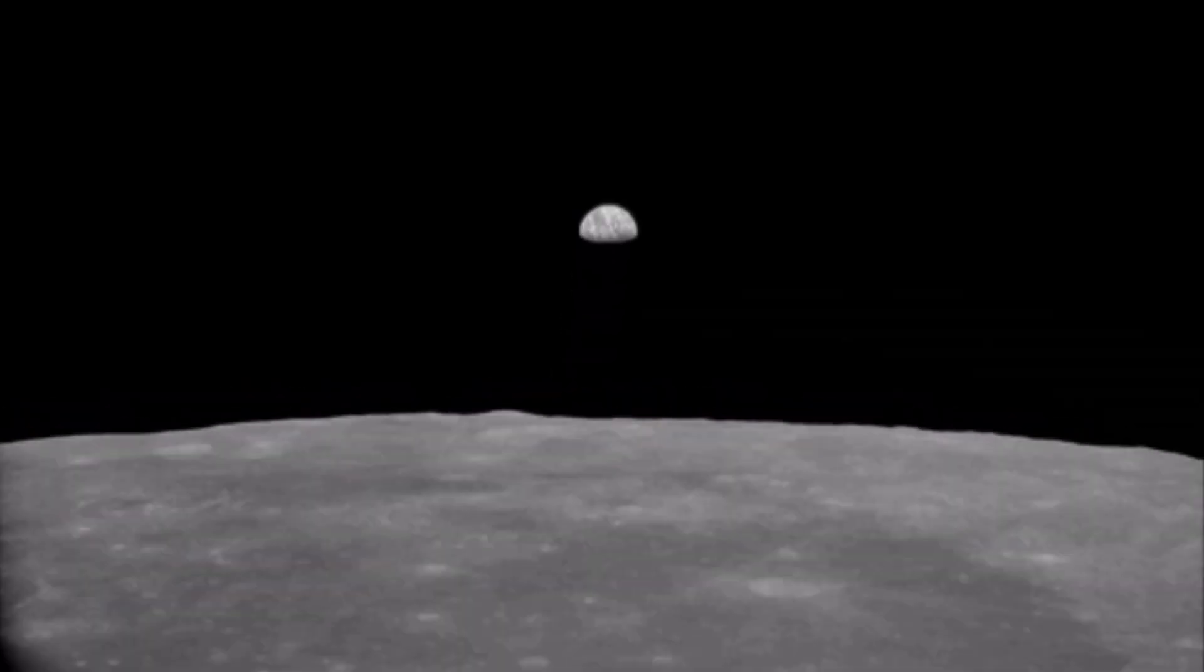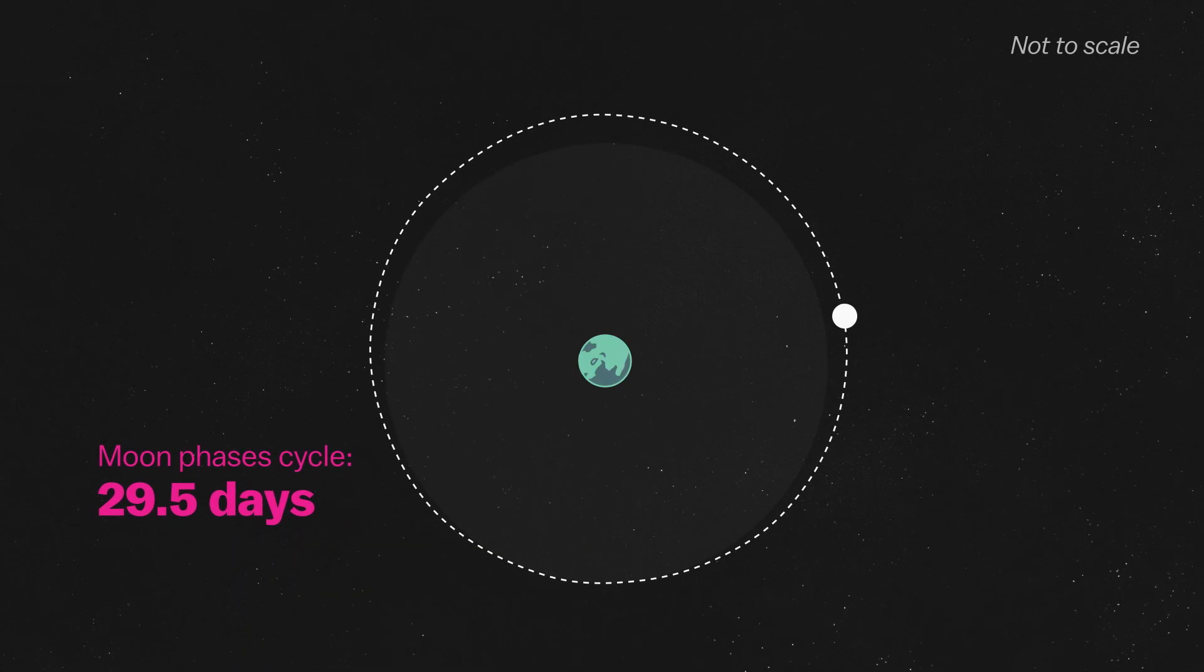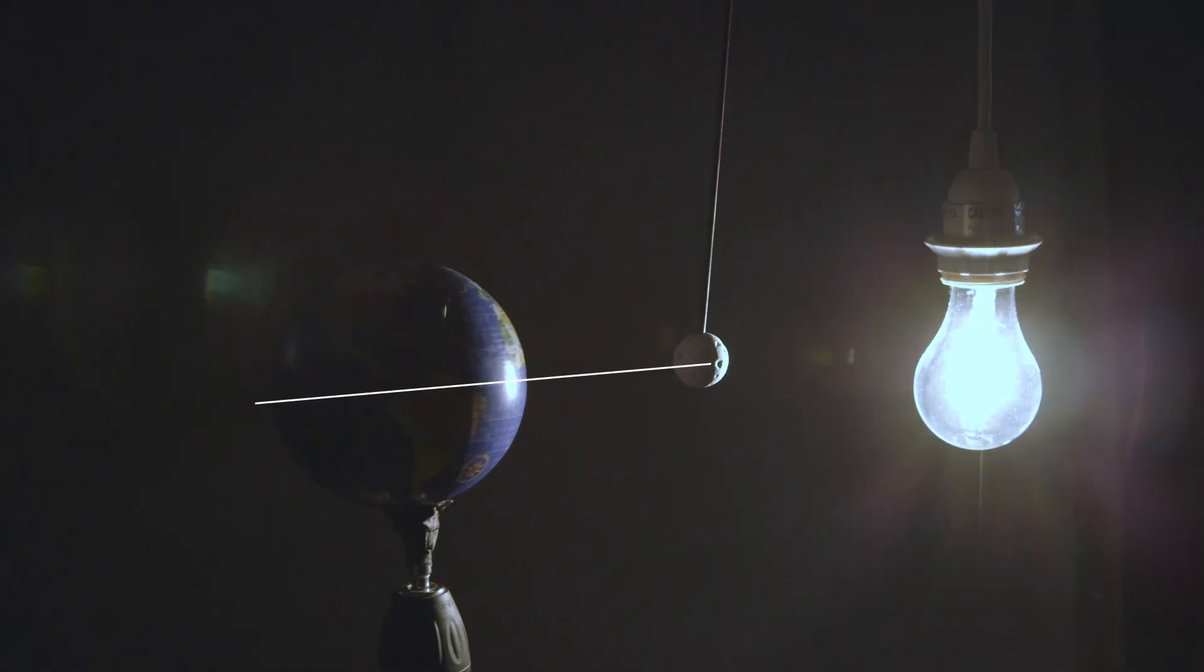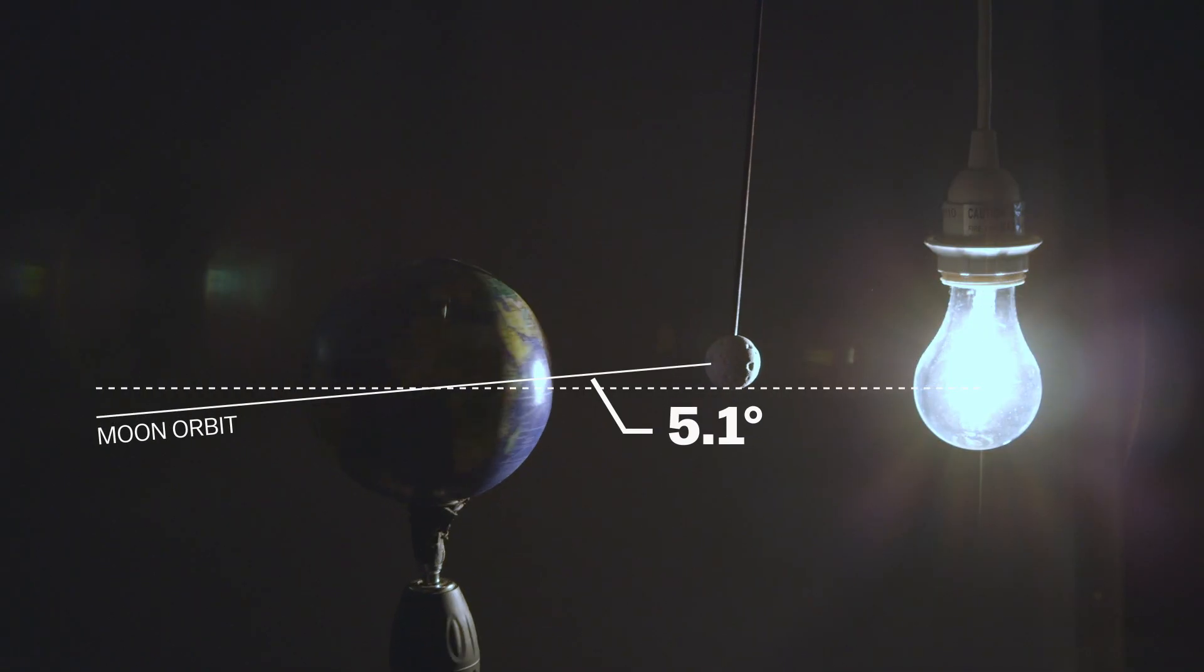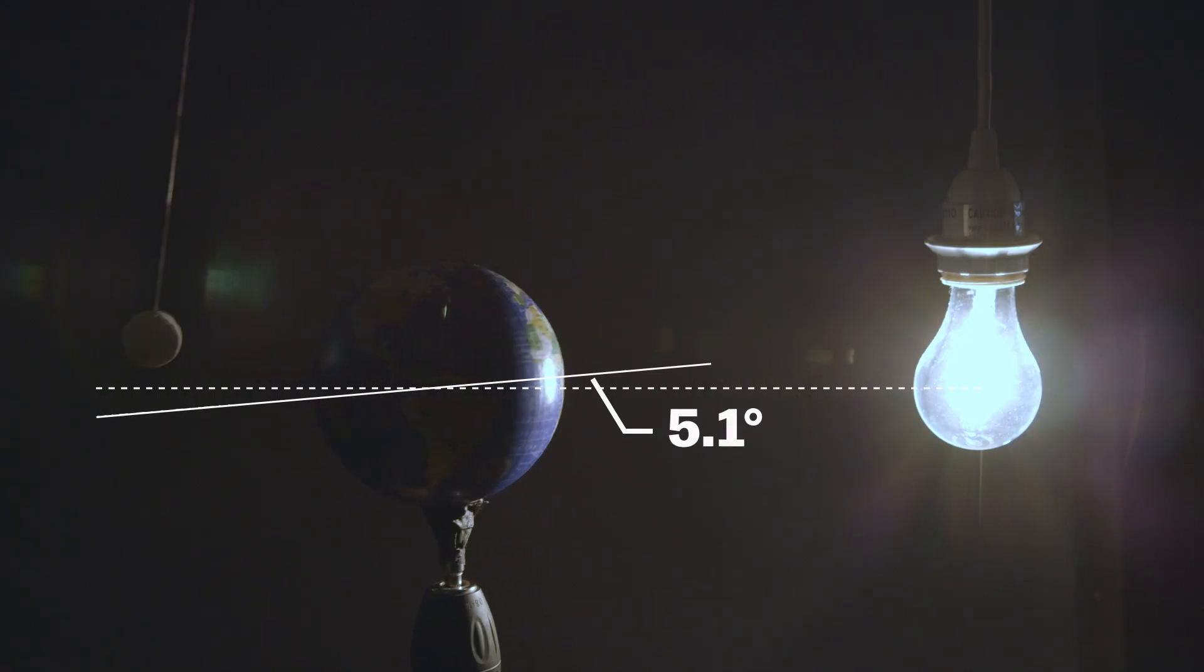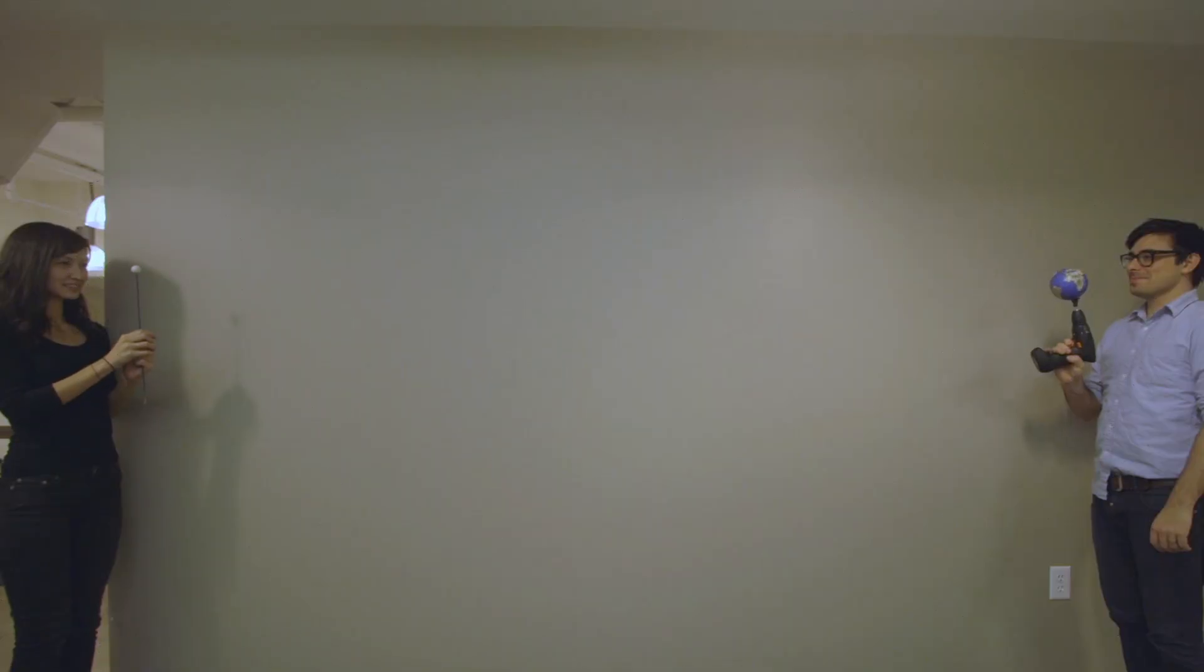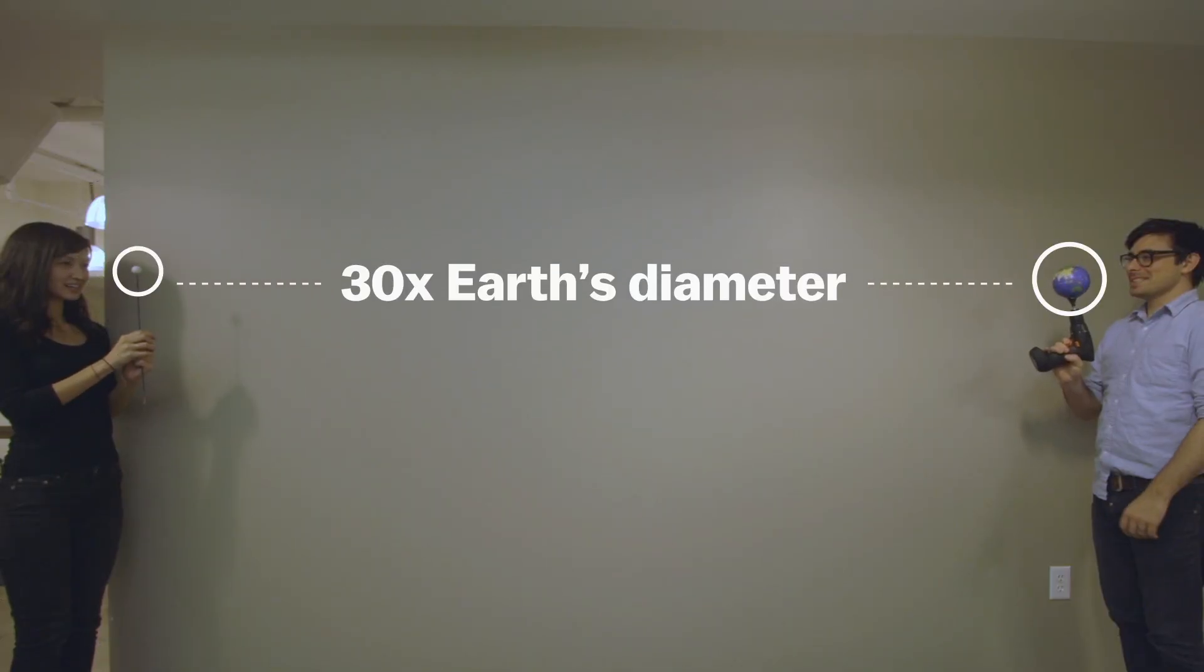The moon orbits Earth every 29 and a half days, but we don't get eclipses every month. That's because the moon's orbit isn't in line with Earth's orbit. It's tilted about 5 degrees. That doesn't seem like much, but keep in mind that the scale of the model we're showing you is way off. If the Earth and moon are this size, the distance between them should be around 10 feet.